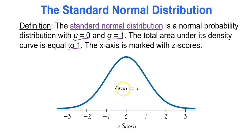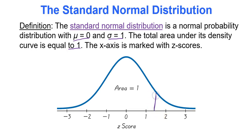The area under the curve will be 1. We'll be given certain z-scores, and we'll have to calculate the area under the curve between two z-scores, to the left of a z-score, or to the right of a z-score.